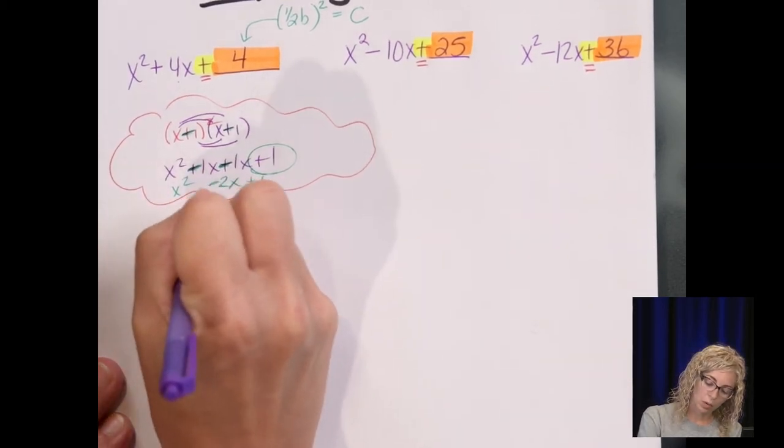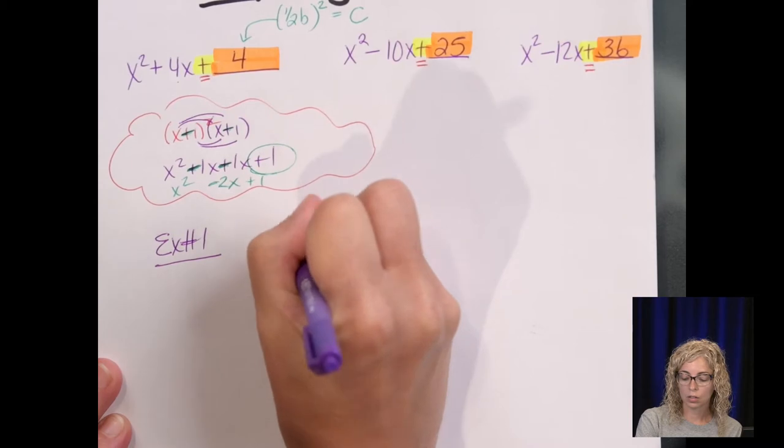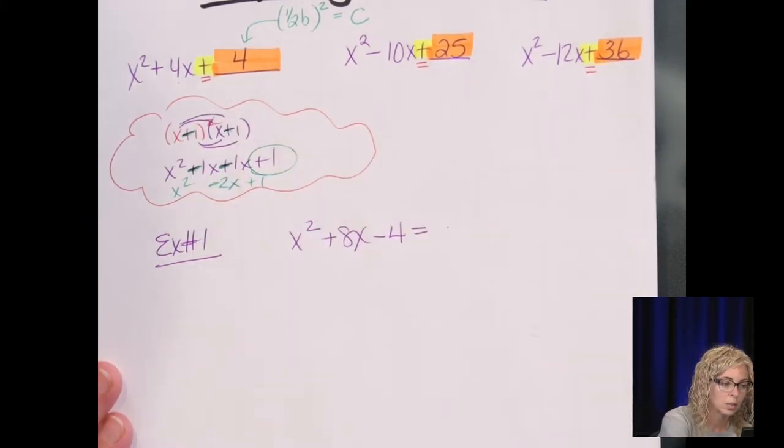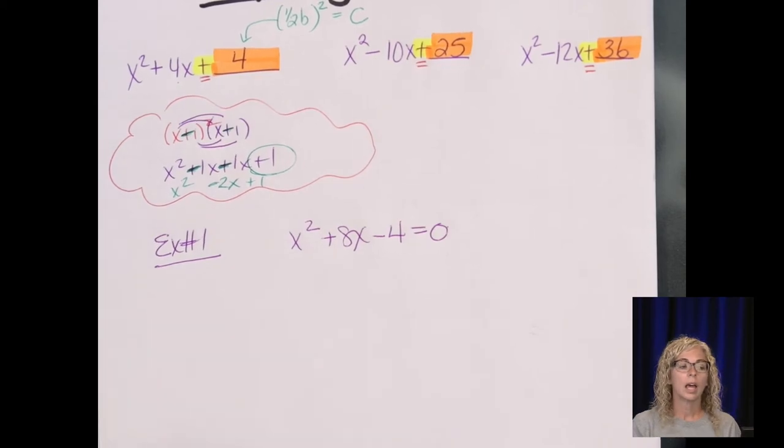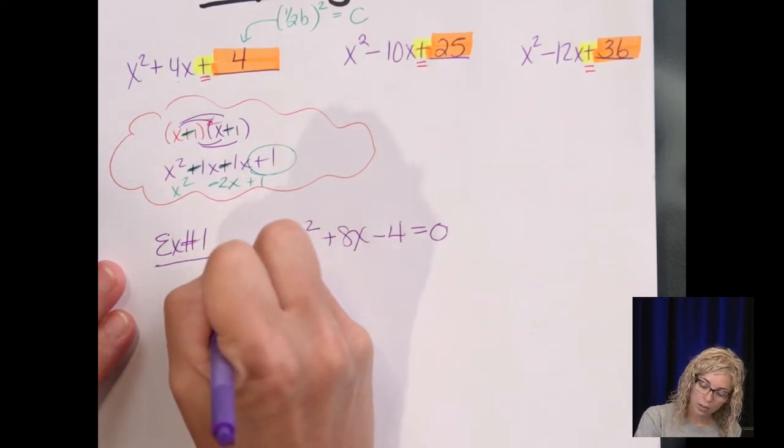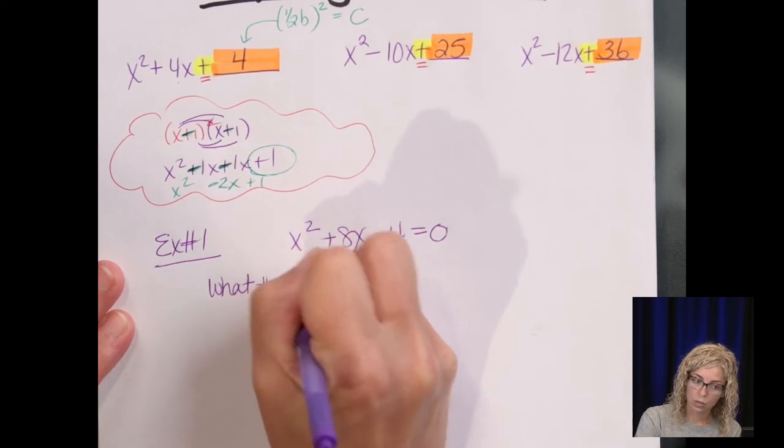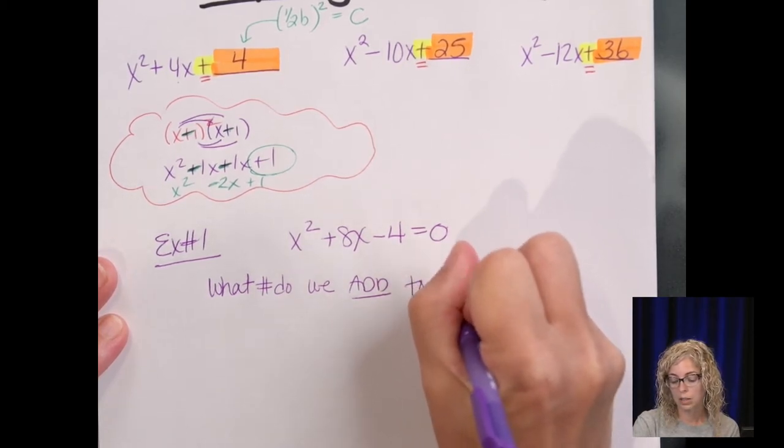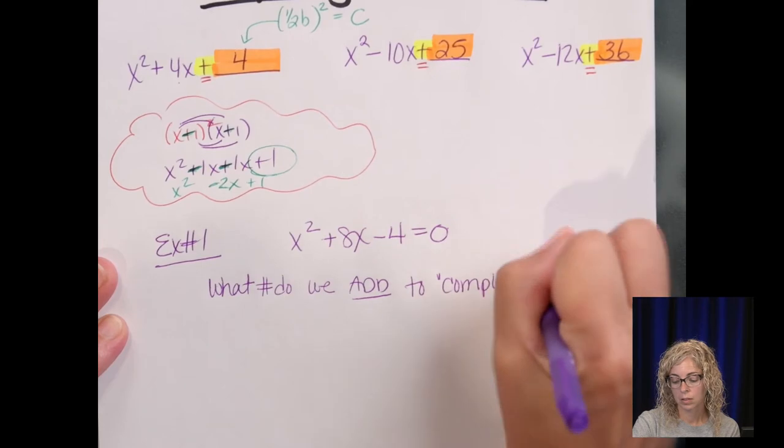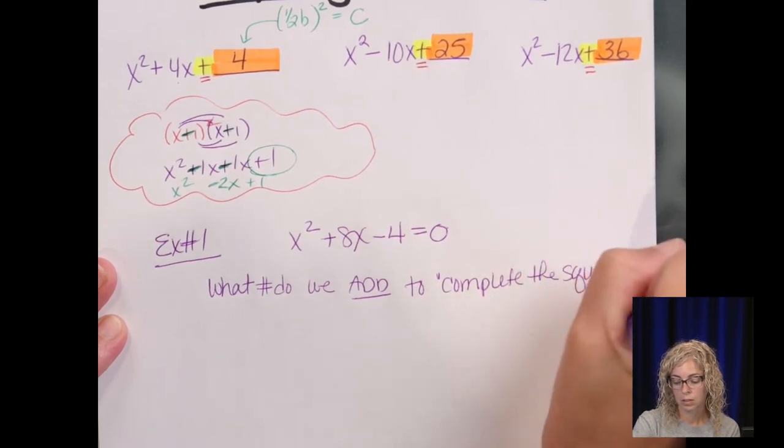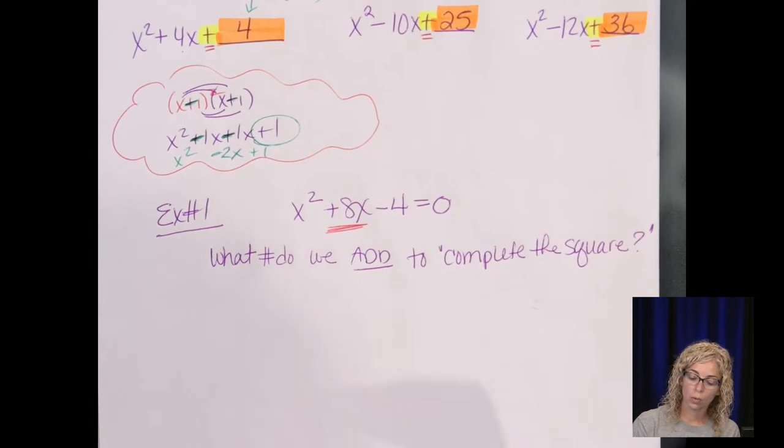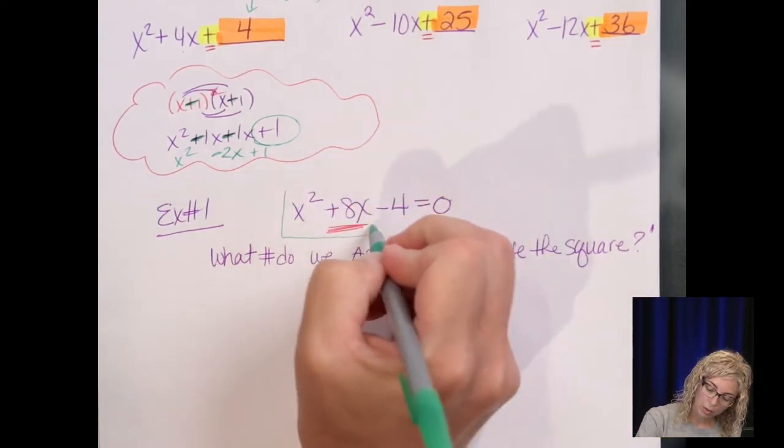Let's look at example number 1. Let's do x squared plus 8x minus 4 equals 0, and they want to know that if we're using the method of completing the square, what number do we add? And again, it's always going to be added. So what do we add to complete the square? We look at that b value.